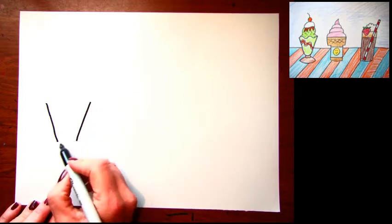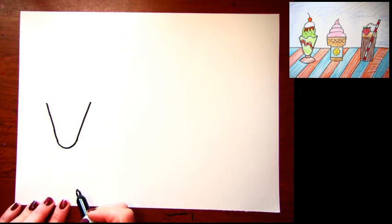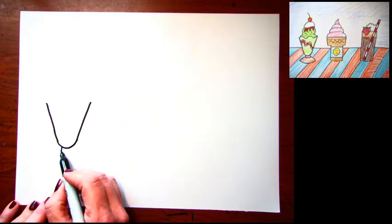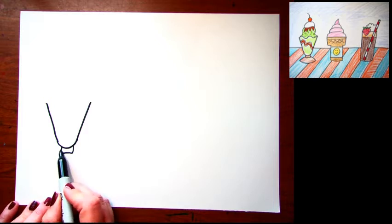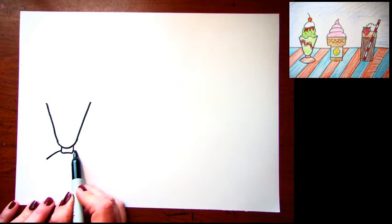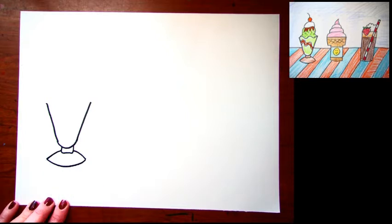But leave that opening at the bottom. Instead of making it pointy we're gonna make it curved. Then we're just gonna add a little shape here at the bottom, that's like the part that holds it up. Two curved lines on each side of that and then another curved line for the stand.